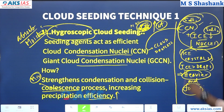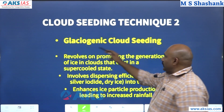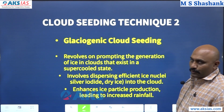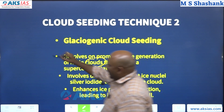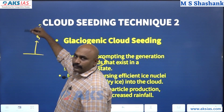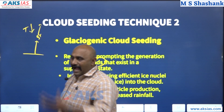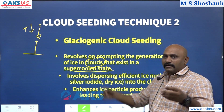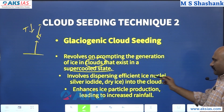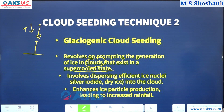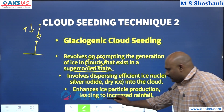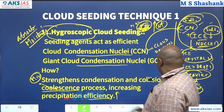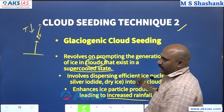Technique two is glaciogenic cloud seeding, used in glaciers and similar settings. It revolves around prompting the generation of ice in clouds that exist in super-cooled states. As we go up through the troposphere, temperature keeps reducing and clouds move into a super-cooled state. Silver iodide is put into the cloud, which creates enhanced ice particle production and leads to increased rainfall. So the two techniques are: first, hygroscopic cloud seeding; second, glaciogenic cloud seeding.